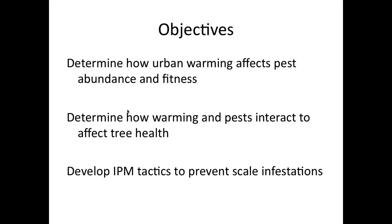Here's a little outline: we'll look at how urban warming affects pest abundance and fitness, how that affects tree health — because if it didn't affect tree health we wouldn't be interested in it — and then we'll talk about some integrated pest management tactics available to help manage and prevent scale infestations.